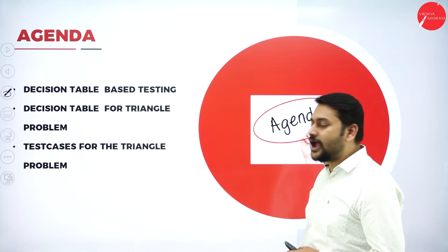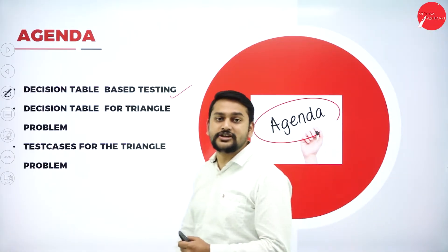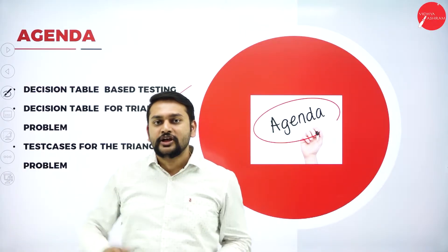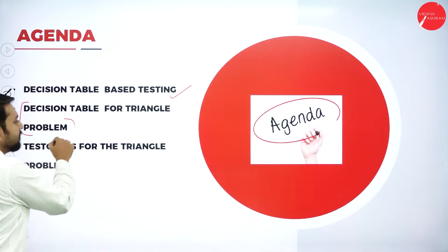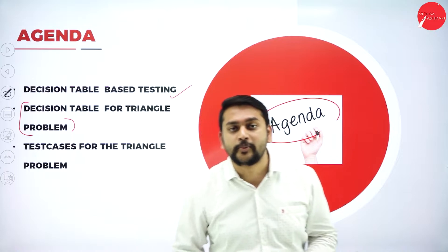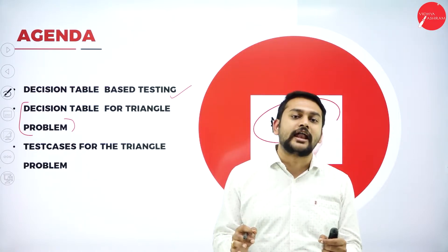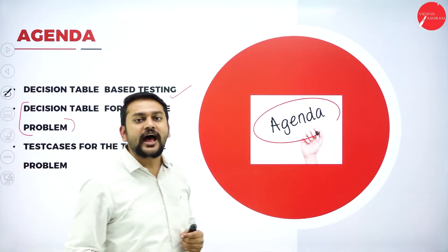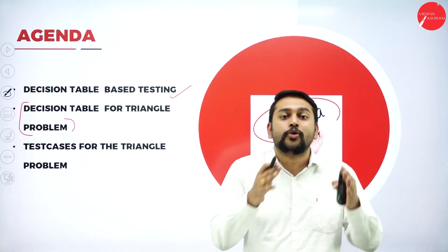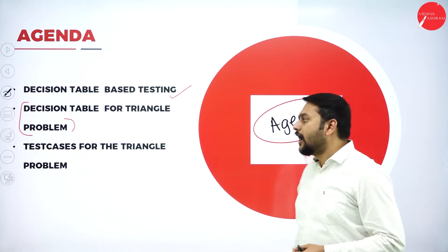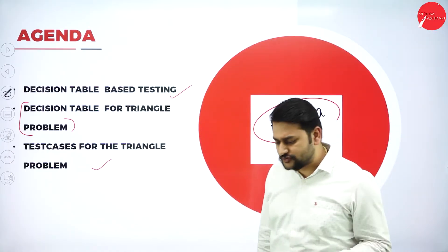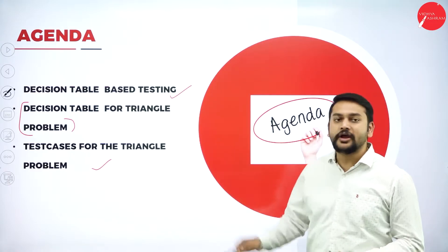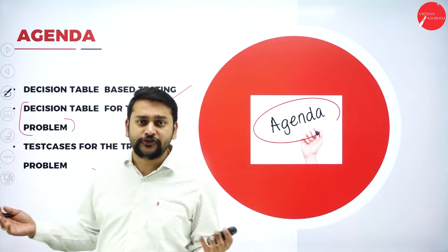So the agenda for today: the first topic is decision table based testing — what exactly it is and how we understand its different parts. The second topic is decision table based testing with respect to the triangle problem. And finally, I will discuss the test cases for the triangle problem, which I have already covered in previous sessions, but will revisit here as a continuation.